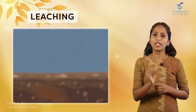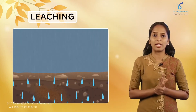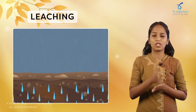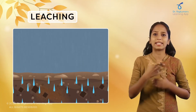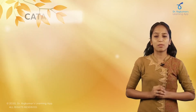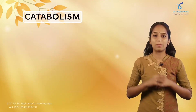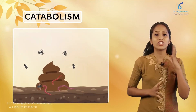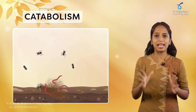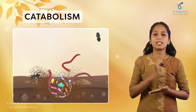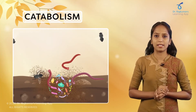The next step in decomposition is leaching. In leaching, the water-soluble inorganic components that have been broken down penetrate into the soil and precipitate as unavailable salts. Further, catabolism is carried out — where bacterial and fungal enzymes degrade the detritus into simpler inorganic substances.